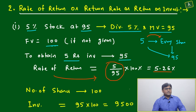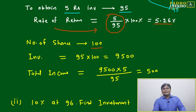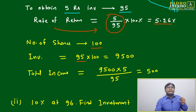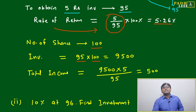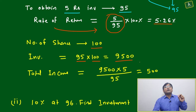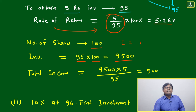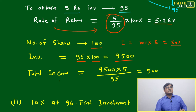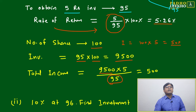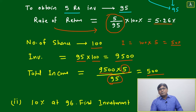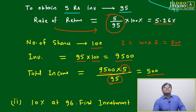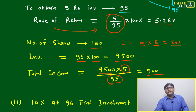The rate of return comes to 5.26%. Now suppose the number of shares is 100. Total investment will be 95 per share × 100 = 9500. To calculate total income: one way is number of shares (100) × dividend per share (5) = 500. Another way is total investment divided by price of one share, multiplied by dividend percentage — that also gives 500. Both methods give the same result.